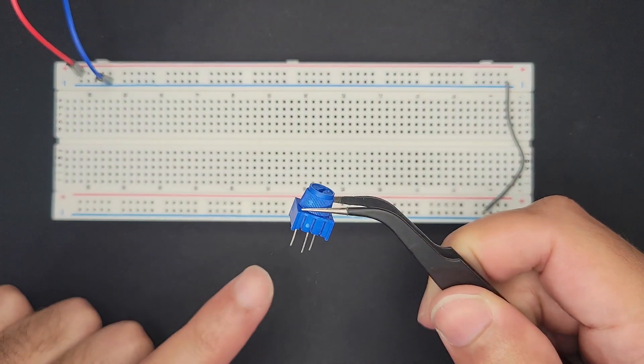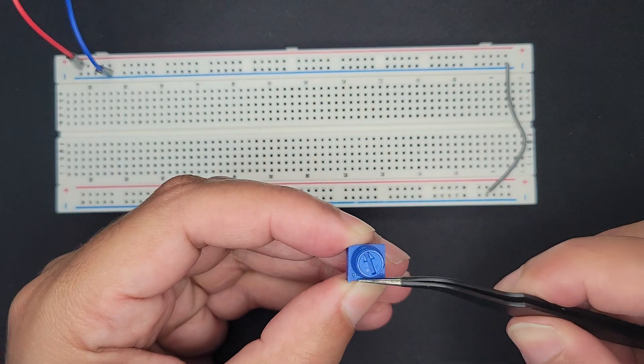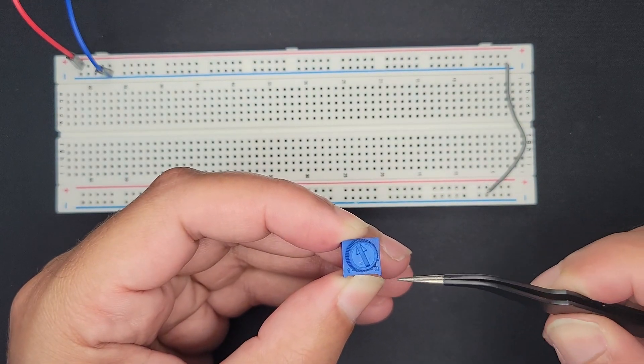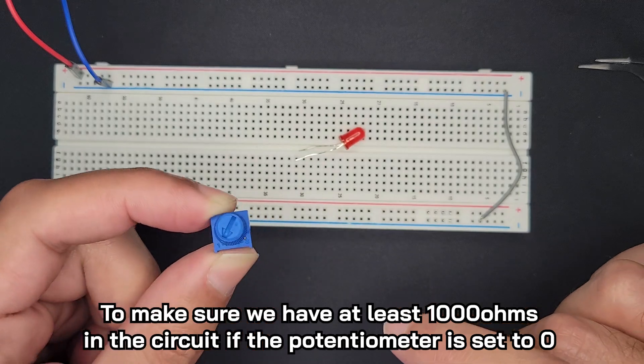This one goes to 10,000 ohms maximum. So the idea is that we can turn it and wherever the arrow is, we could say a percentage between zero and 10,000. I'm going to put in another resistor that will make sure that we have a minimum value.